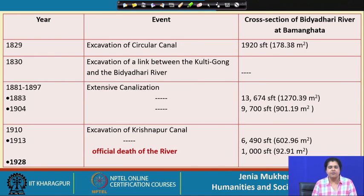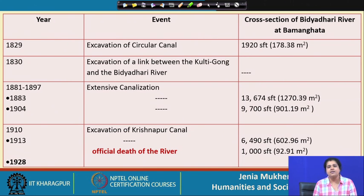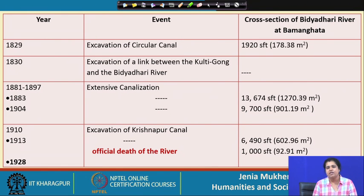The Bidhyadari faced numerous interventions because many canals were excavated by taking water from the Bidhyadari river, and also to a great extent it died its natural death. There is a controversy among colonial experts about what led to the decline — some argue it died a natural death, while others argue that so many interventions and disruptions were made to the river that there was a great reduction in its flow.